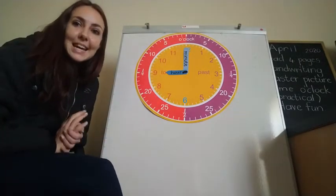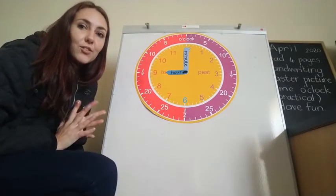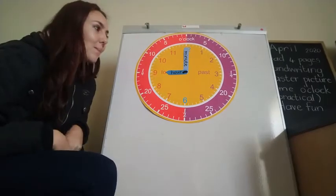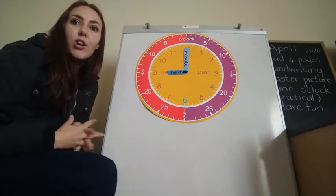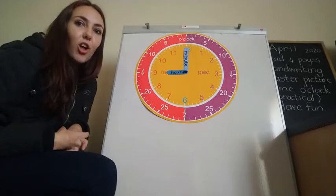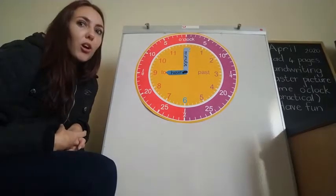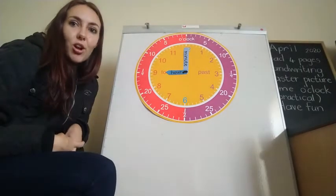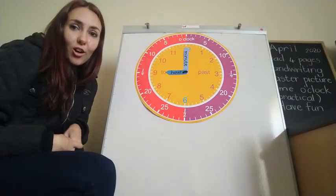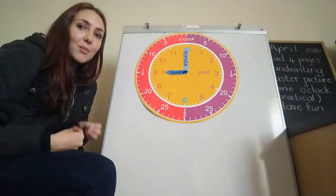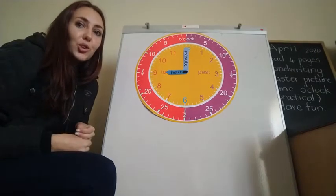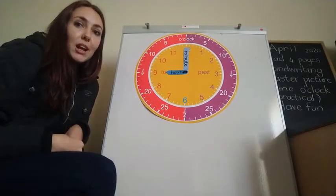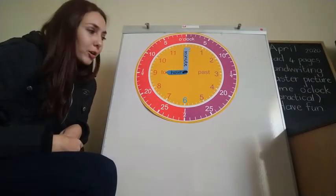So mums and dads, I want you to please give your children times. Tell them 3 o'clock, 6 o'clock, 12 o'clock, 5 o'clock, 8 o'clock, 10 o'clock and let them practice showing you what the time will look like on their clock.